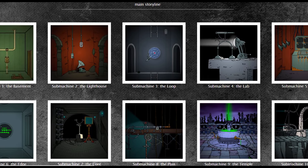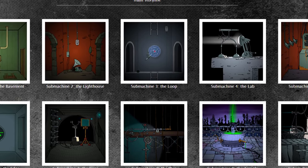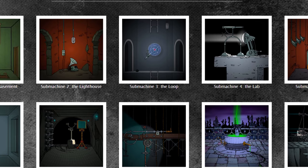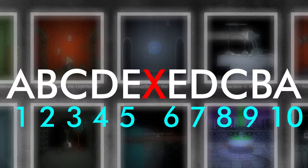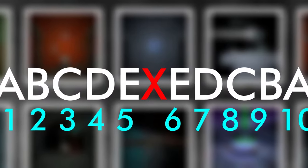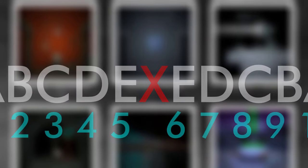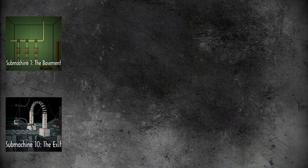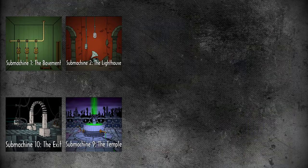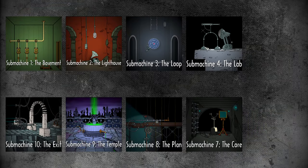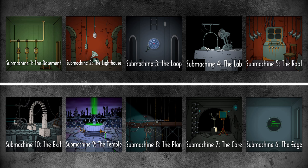Ten divided by two is five, so there are five pairs of games that directly compare or contrast with each other, giving us a chiastic structure with the form A, B, C, D, E, X, E, D, C, B, A — with the X being the transition between Subs 5 and 6. We'll match the games up as follows: one with ten, two with nine, three with eight, four with seven, and five with six. Now all we have to do is compare each game in a pair with the other and see the characteristics that show how much these games reflect each other, either in their obvious similarities or their stark, undisputable differences.